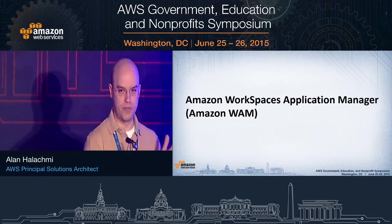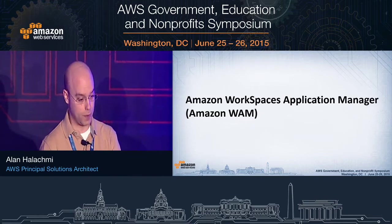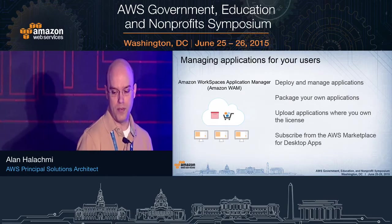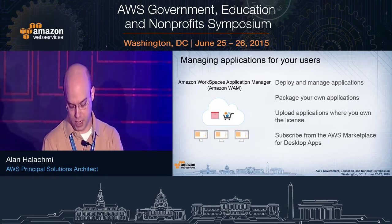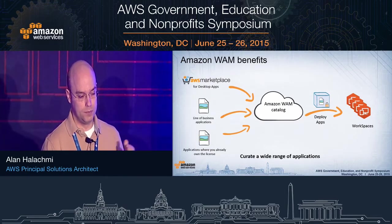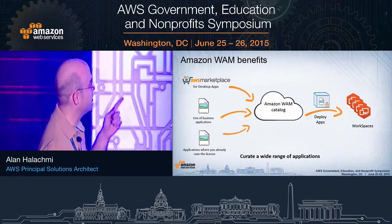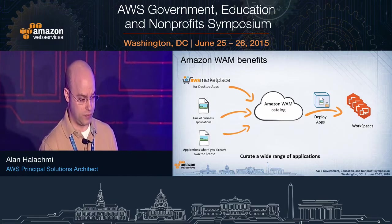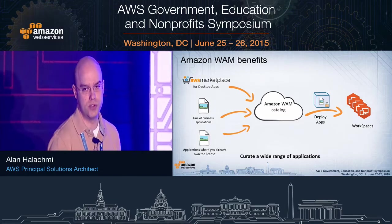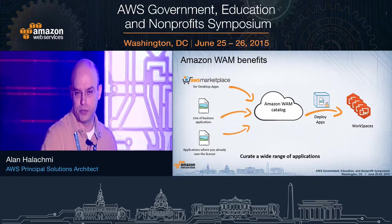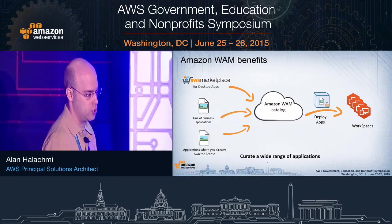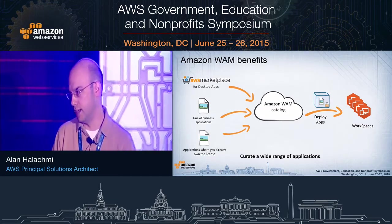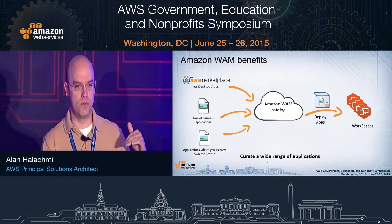Now let's see how we can use WAM with WorkSpaces. WAM provides the ability to curate a catalog of applications and simplify their deployment, administration, and maintenance. WAM applications come from one of three places: the AWS Marketplace for desktop apps, line-of-business applications you've developed in-house such as batch files or compiled EXEs, and third-party applications where you've already pre-licensed software. For example, if you have a productivity suite, you can bring it into WAM for management and distribution.